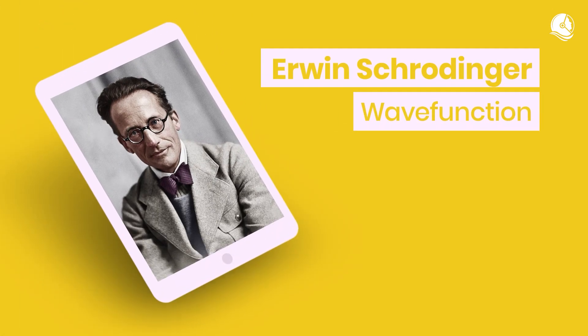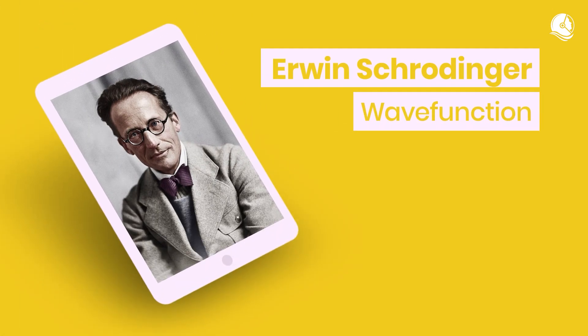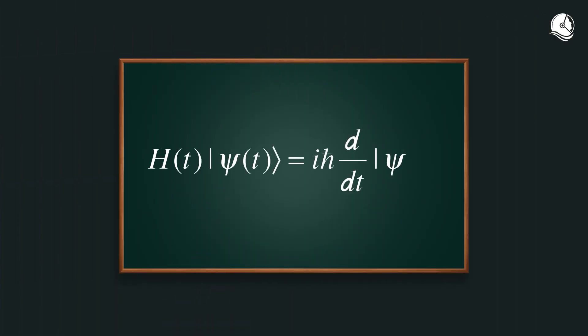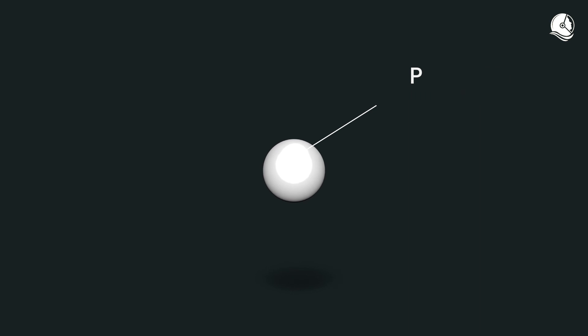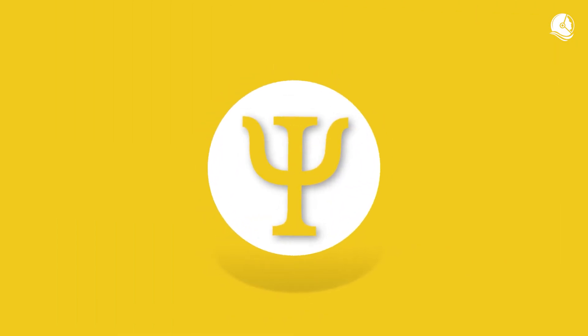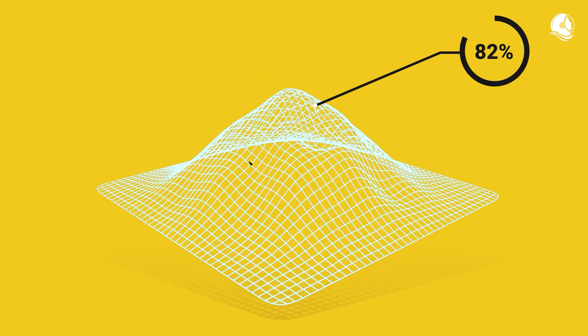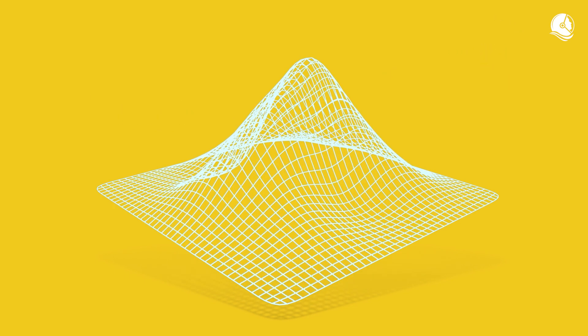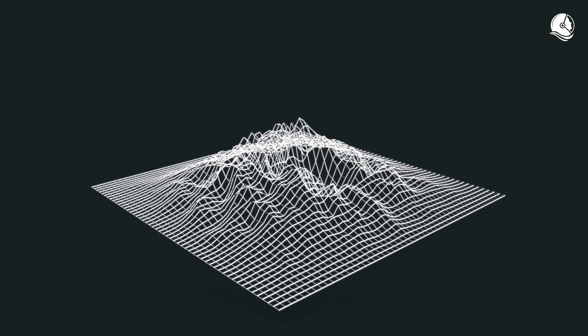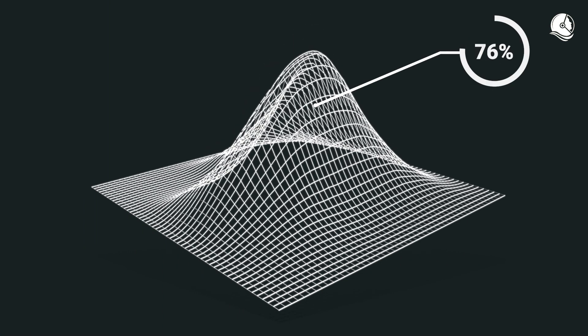Following up on his work, Erwin Schrödinger invented an equation, famously known as the Schrödinger equation, which tells how the wave function evolves over time. The wave function is a mathematical expression that describes the configuration of a quantum object. Denoted by the Greek letter psi, the wave function itself does not have a physical significance, but its squared modulus gives the probability density of measuring a particle's location or momentum at a given time. The larger the amplitude, the higher is the probability of finding the particle at that location.